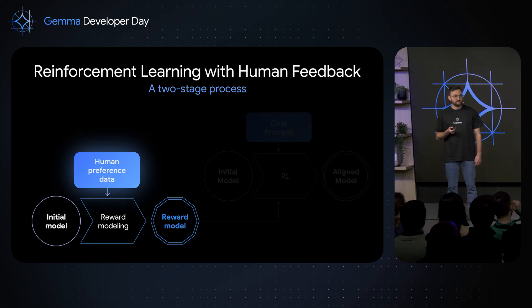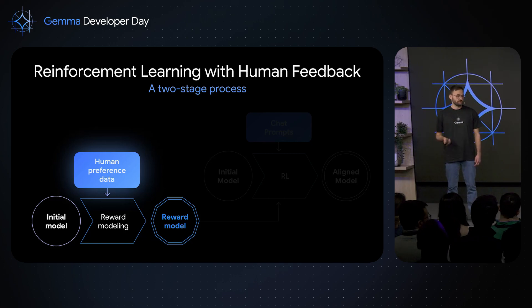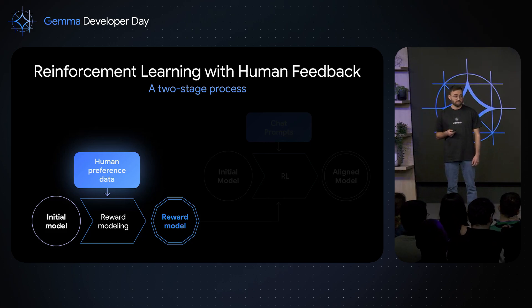This is important because a pre-trained model is mostly like a parrot — it's used to predicting next words and doesn't really capture what humans intend, just a distribution of language at large. When we do alignment, we want to align on criteria such as safety, the right amount of chattiness, the right vibe for your model. That's what alignment stands for and what human preference data is used for.